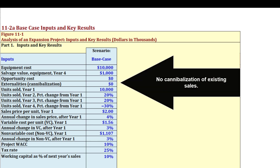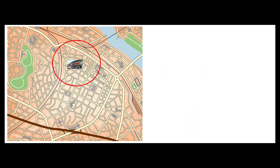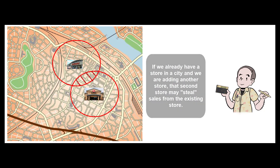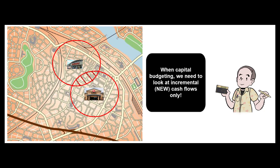As a quick example of cannibalization: if a grocery chain has an existing store in a town and they're thinking about adding a second store, their cash flow estimations for the second store have to account for the fact that some of its sales are cannibalizing the existing store. So in capital budgeting we want to look at incremental cash flows — truly new cash flows.